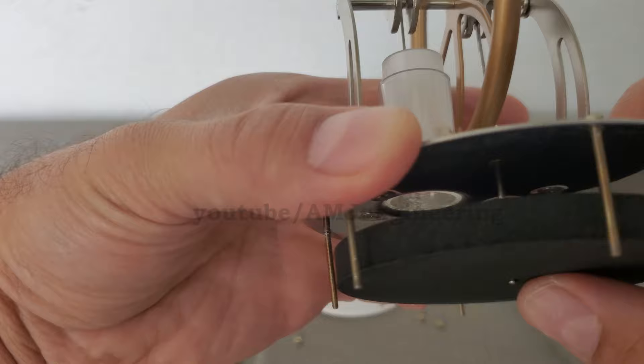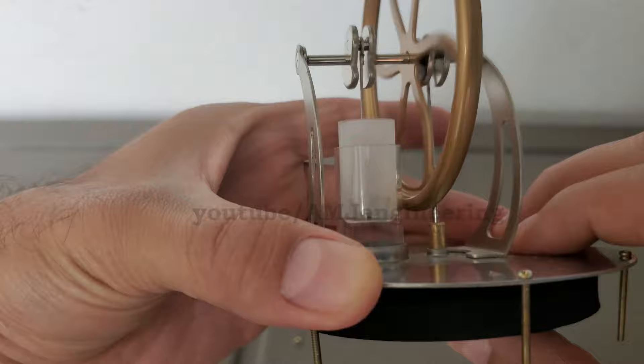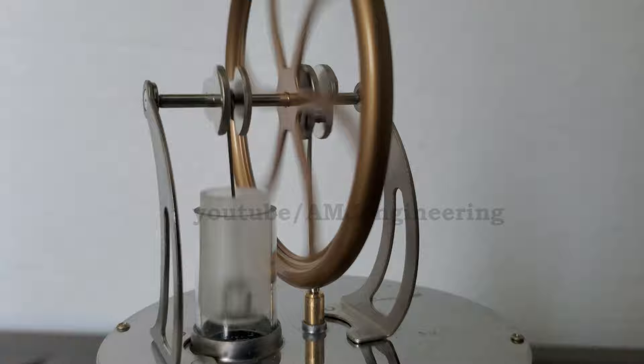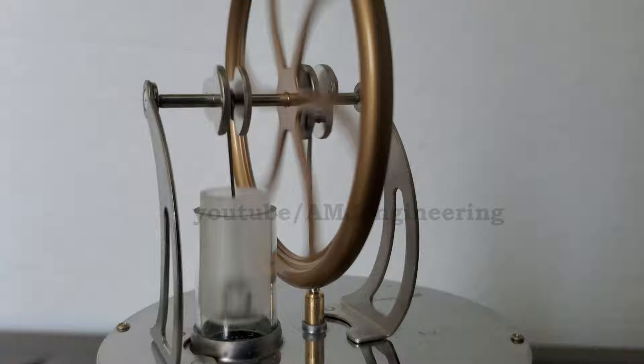The work piston and the displacer piston are both constantly moving, but they are out of step—one quarter cycle or 90 degrees out of phase with one another. They're powered by the same wheel, but the displacer piston is always one quarter cycle ahead of the work piston.